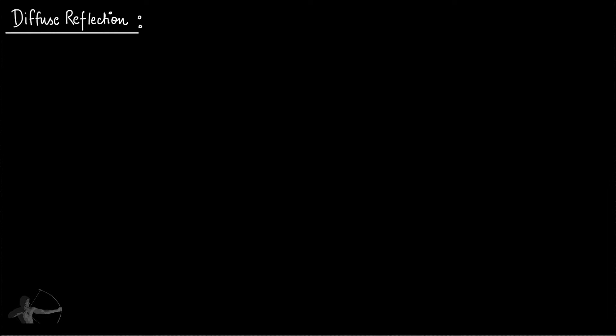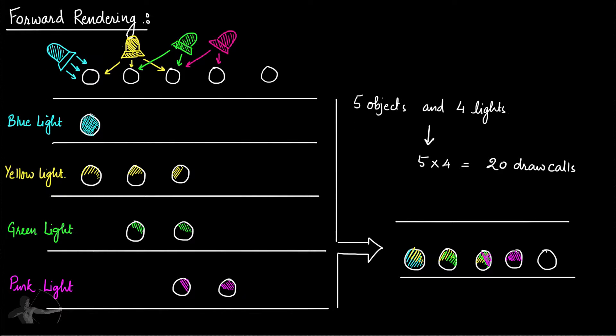There are a few things that we will discuss before we start writing the code. In the chapter of basic lighting model and rendering path, we understood that there are different rendering paths and one of them is the forward rendering.